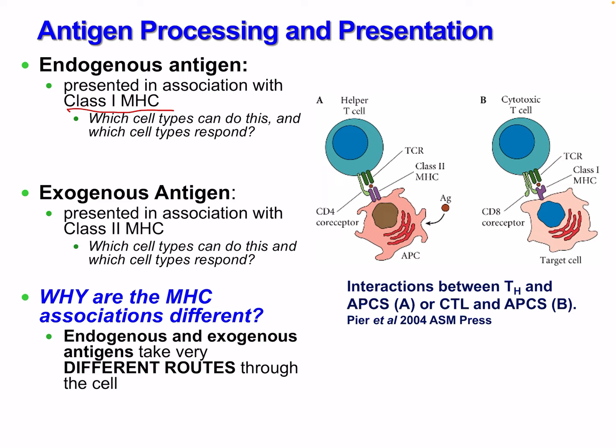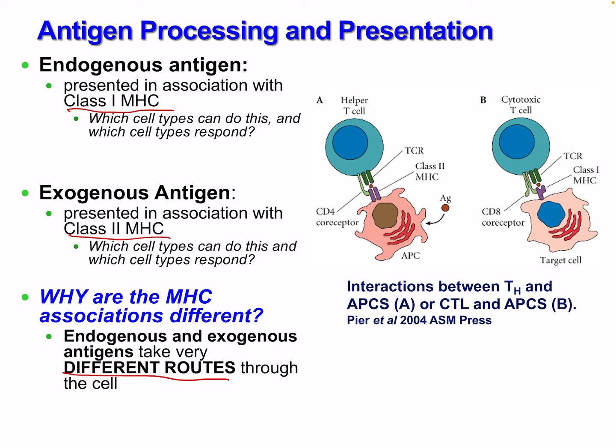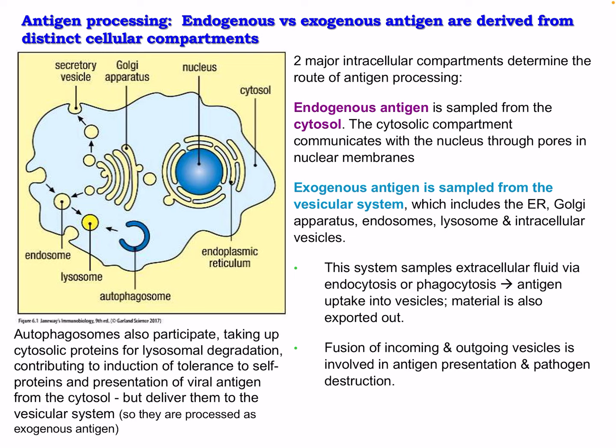Endogenous antigen is presented in association with class 1 MHC; exogenous antigen uses class 2 MHC. Why the differences? Endogenous and exogenous antigens take very different routes through the cell, as you can see in this figure — they are clearly not the same.